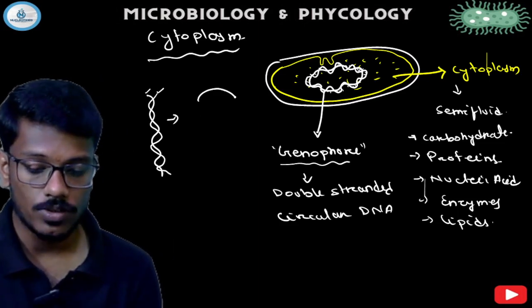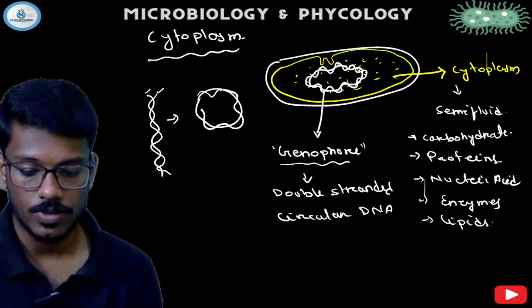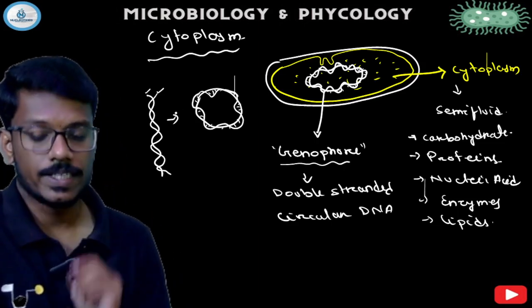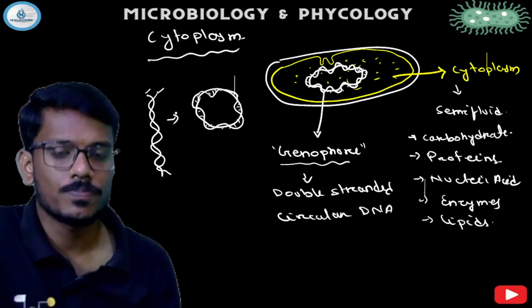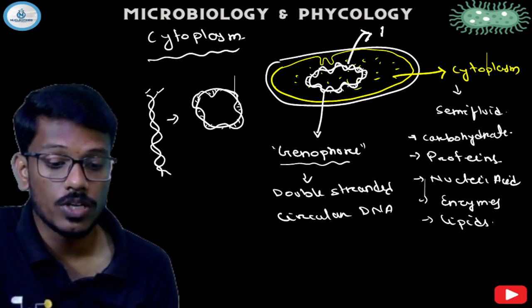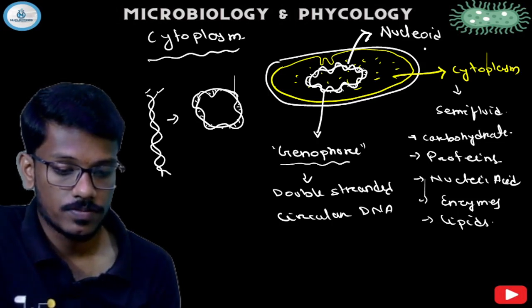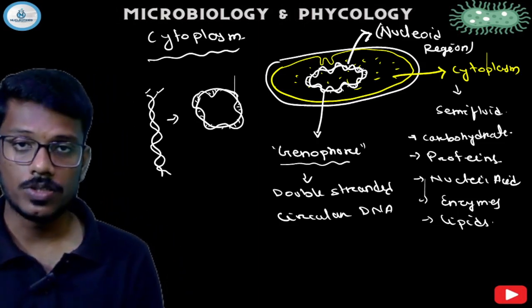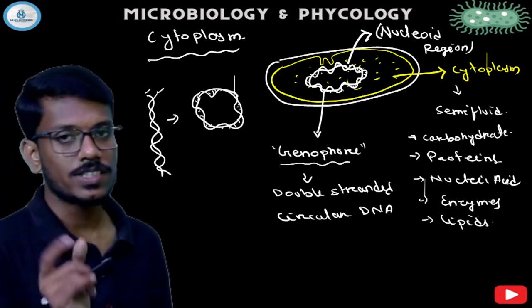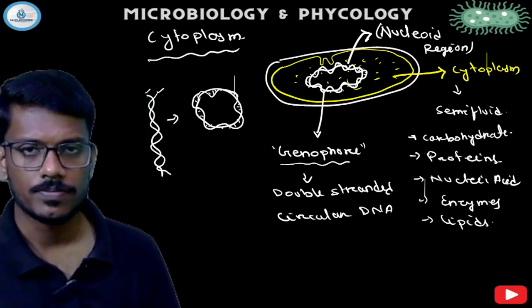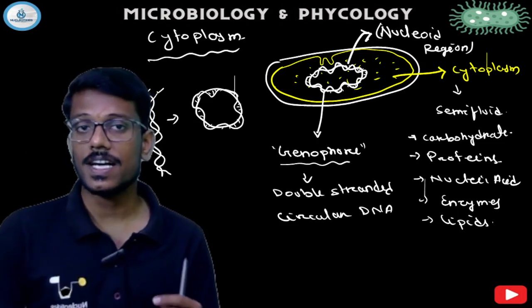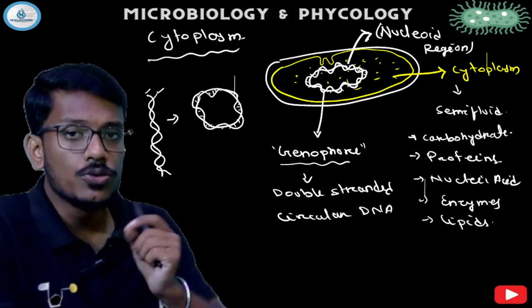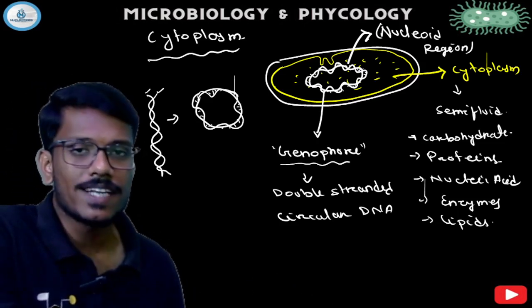This double-stranded circular DNA is present in the bacteria. In some cases, single-stranded DNA may also be present. The circular DNA is located in a region called the nucleoid or genophore. So the site of the double-stranded circular DNA in the bacterial cell is called the nucleoid or genophore region. If asked what DNA is present in bacteria, we write that circular double-stranded DNA is present in the cytoplasm in the nucleoid region.